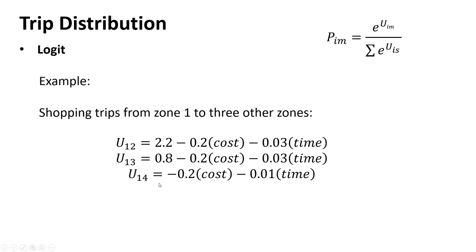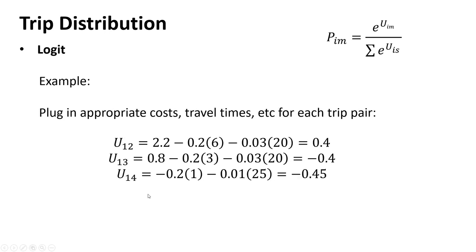The Achilles heel of the Logit model is how well you can formulate the utility functions. Travel demand modeling is not an exact science — all systems have issues. If you can define those utility functions well, Logit works pretty well. With three choices, your denominator is simply the sum of e raised to each of the three utilities.